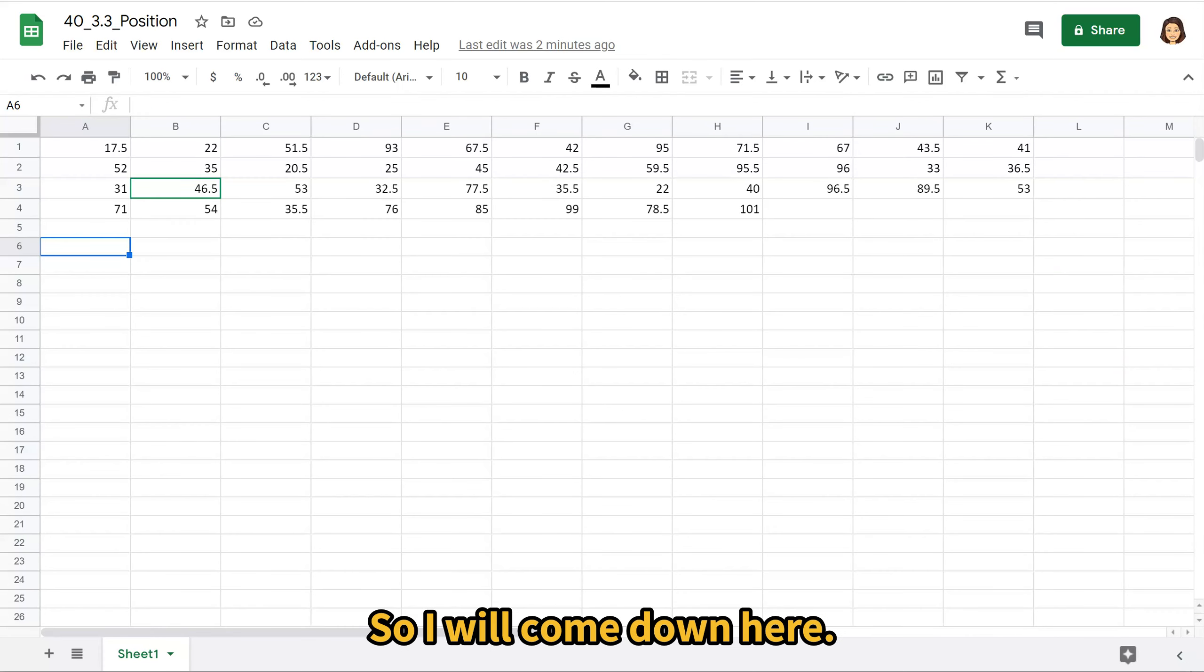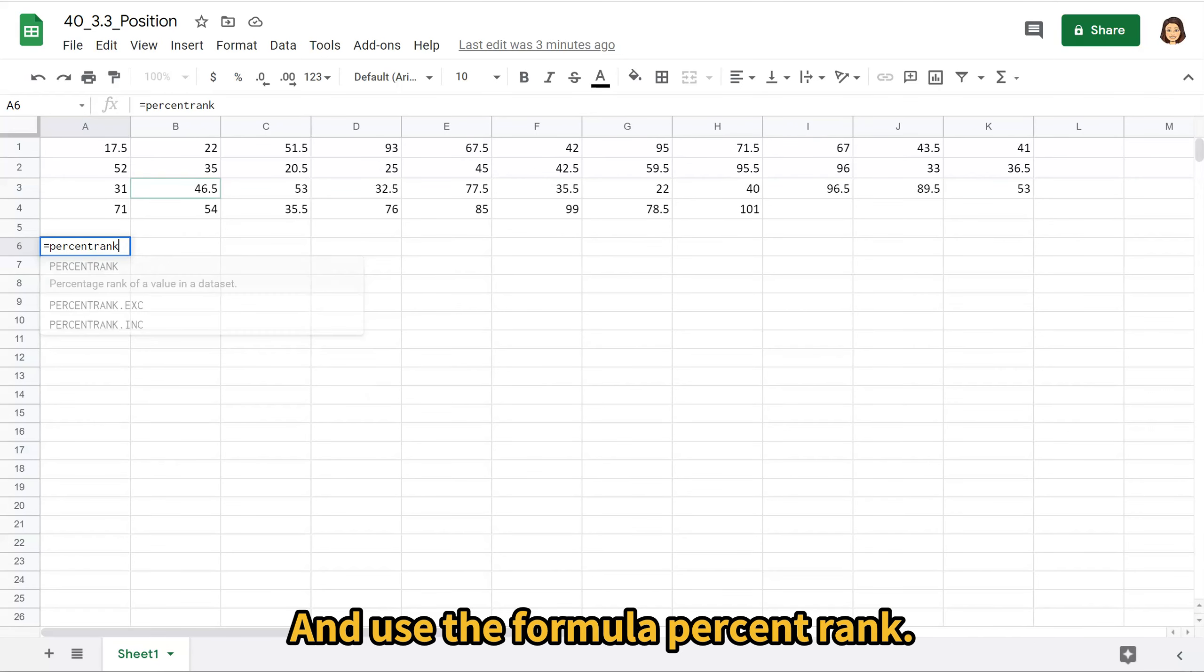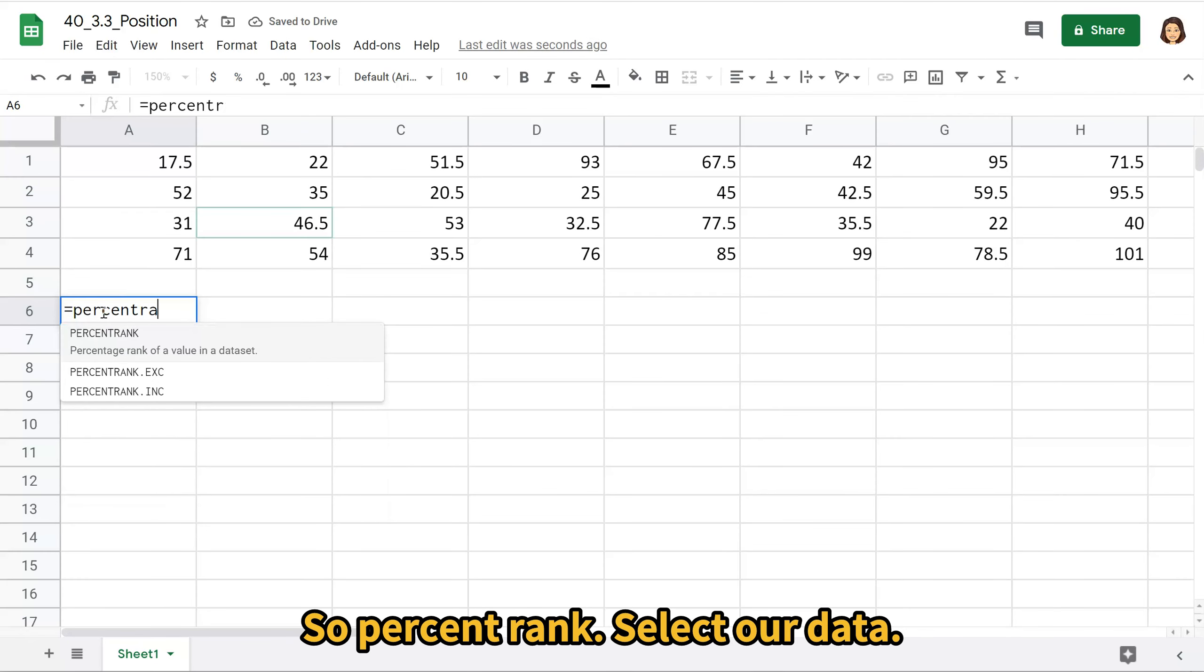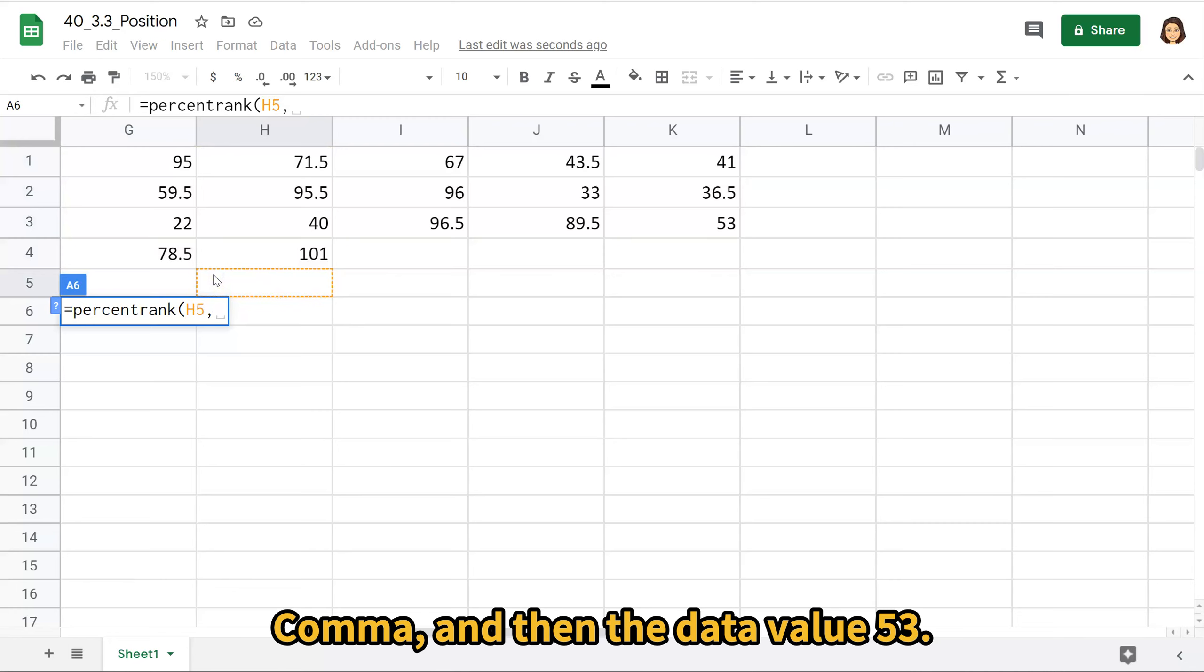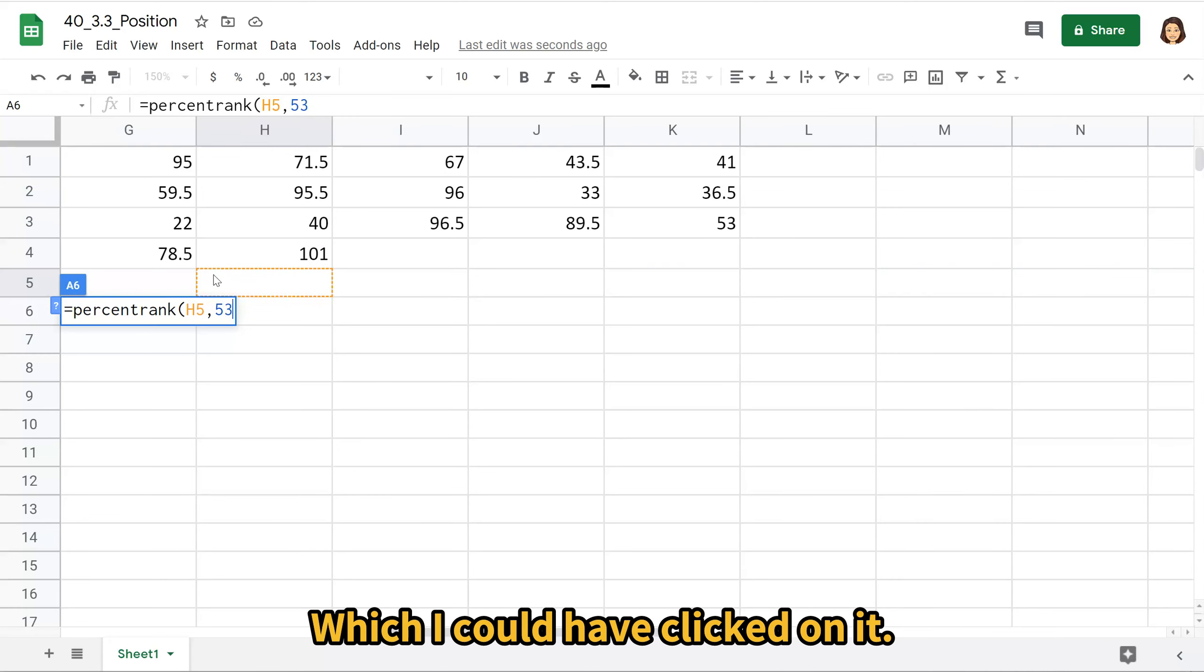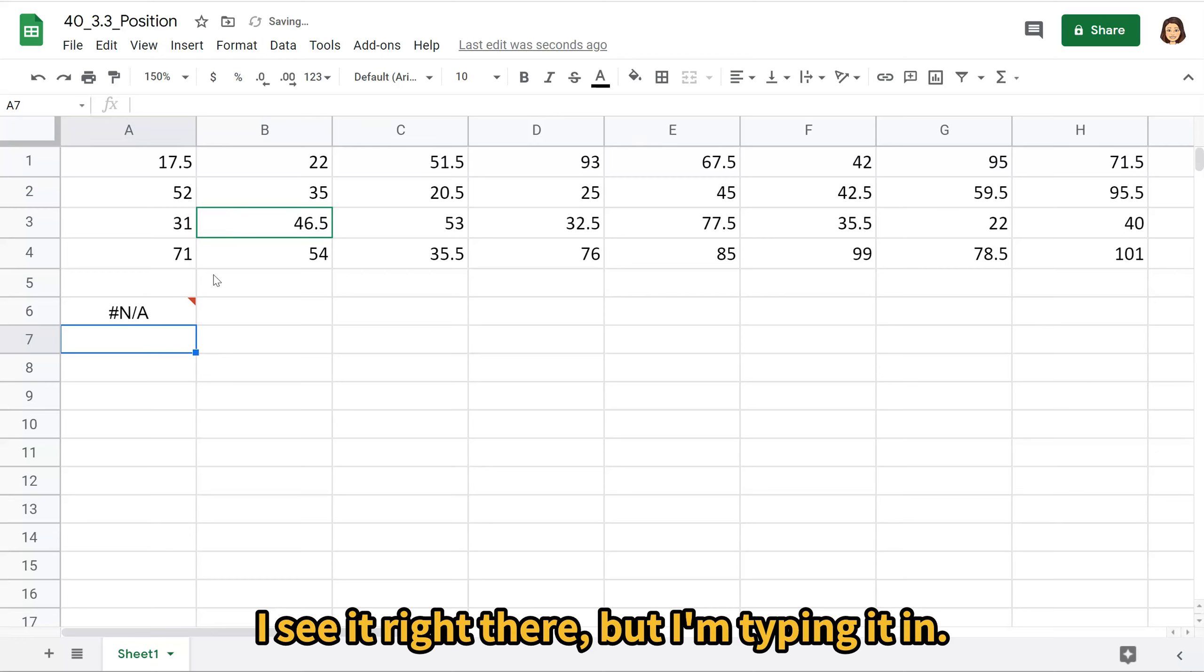So I will come down here and use the formula PERCENTRANK. So PERCENTRANK, select our data and make sure you go all the way over and select all of it, comma, and then the data value 53, which I could have clicked on it. I see it right there, but I'm typing it in.